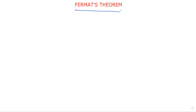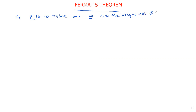Hi friends, welcome to our channel. In this session we will discuss Fermat's theorem with some examples. Simply, if p is a prime number and a is a positive integer not divisible by p, then Fermat's theorem states that a^(p-1) ≡ 1 (mod p).